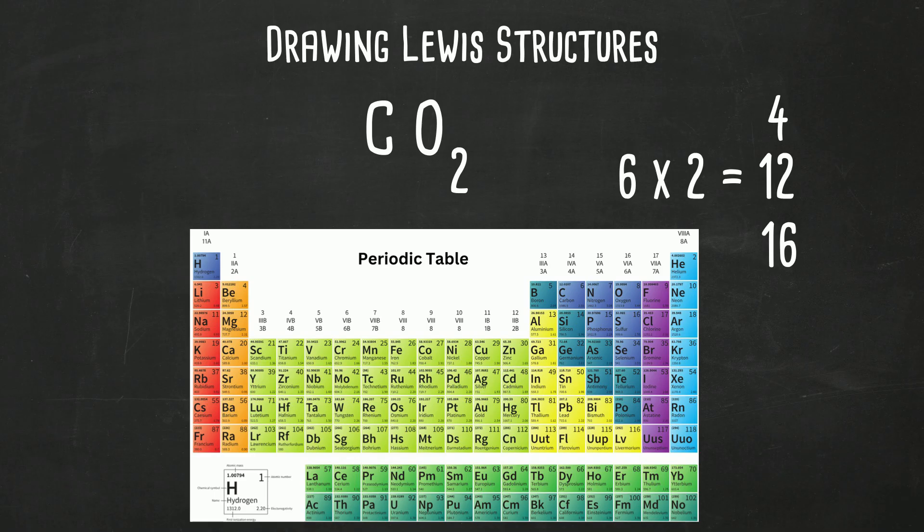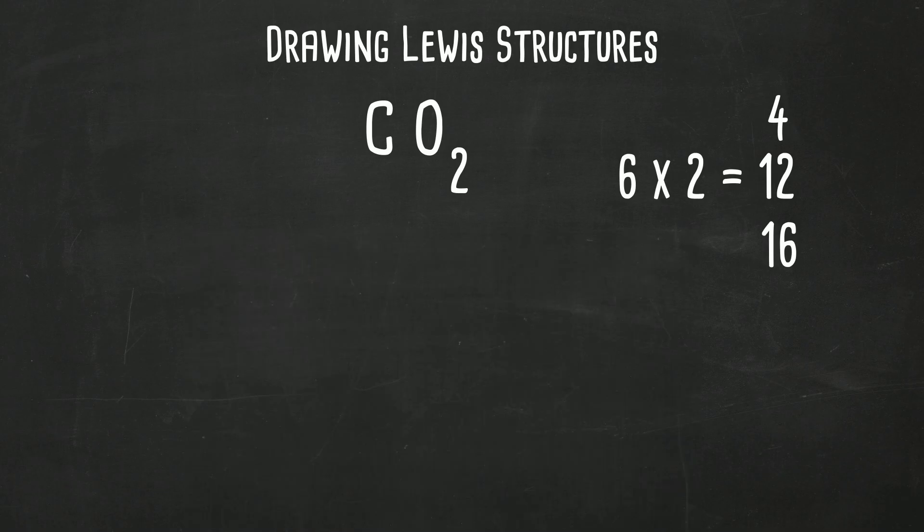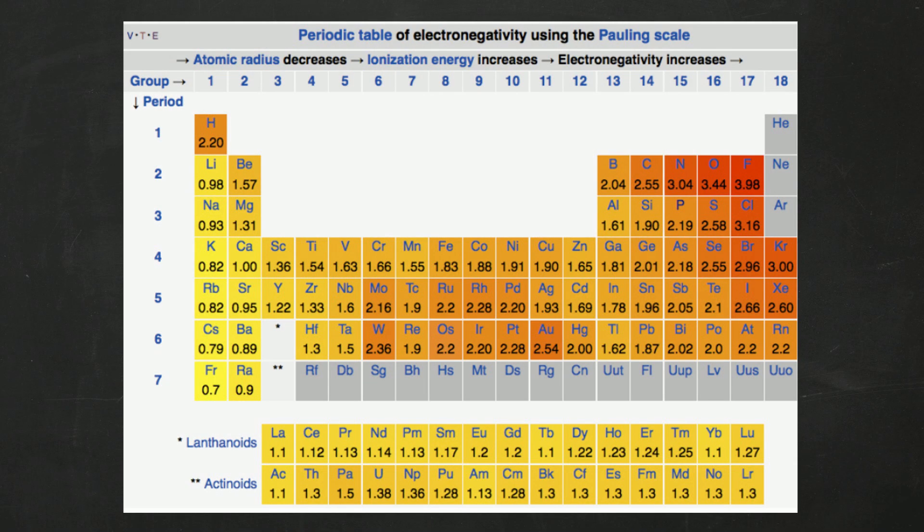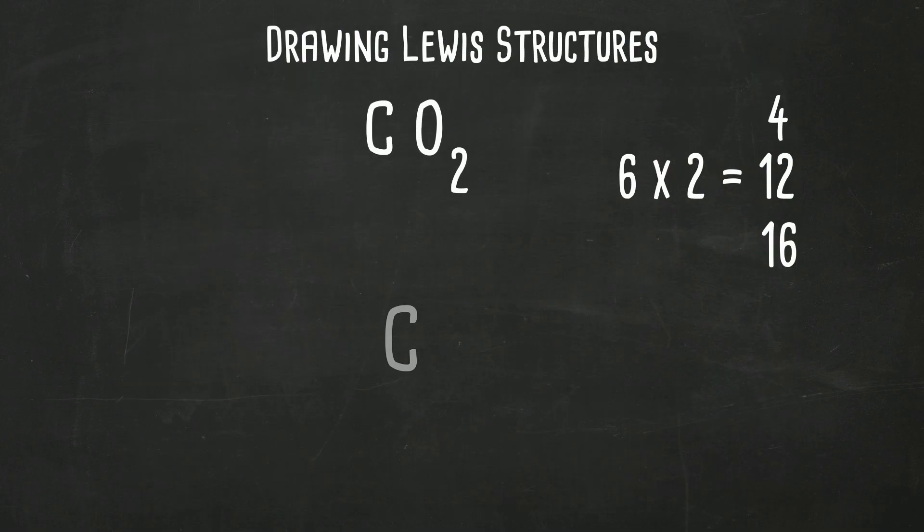Now which element when we draw the skeleton structure is going to go in the middle? If you'll notice on the periodic table, carbon has a lower electronegativity than oxygen. So we're going to put carbon in the center and then the two oxygens.